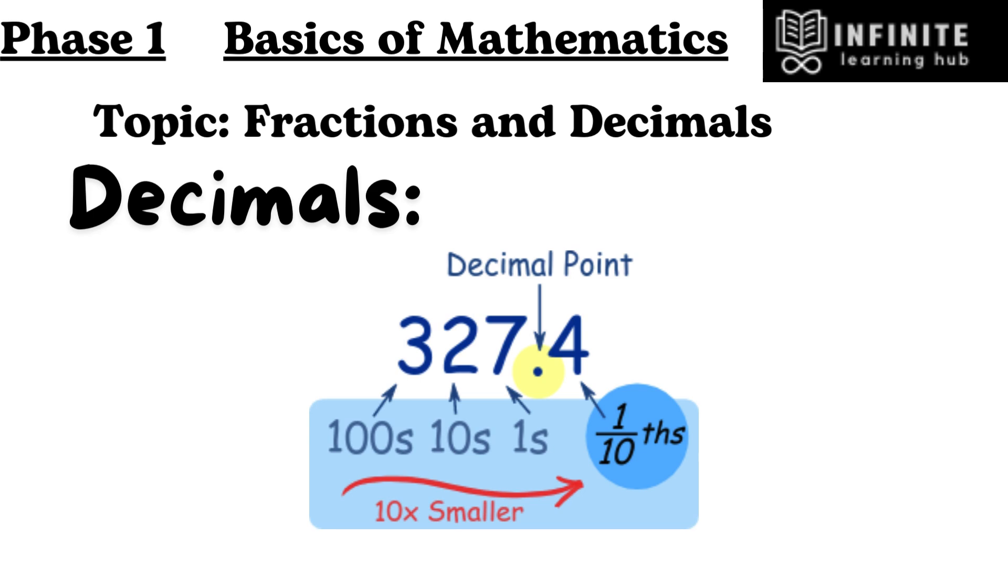But we must first put a decimal point, so we know exactly where the 1's position is. 327 and 4 tenths. But we usually just say 327.4, and that is a decimal number.